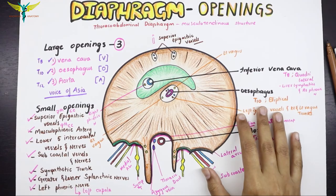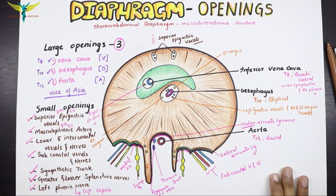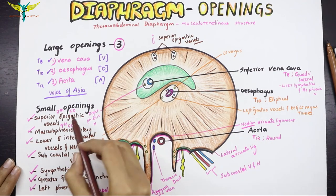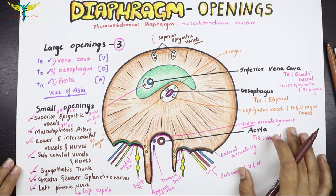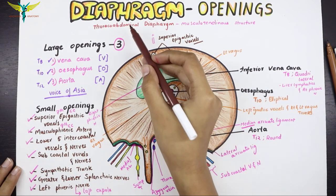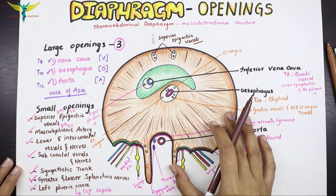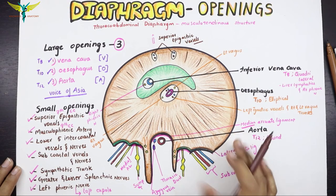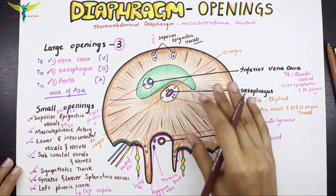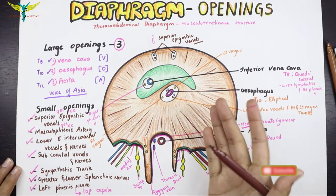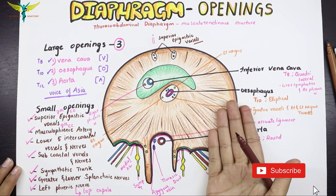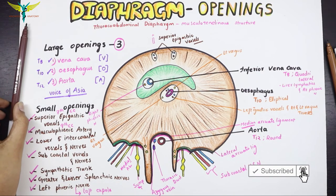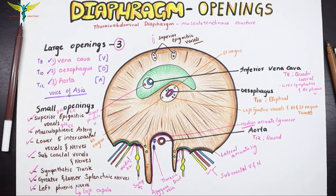So this is all about the openings of the diaphragm. There are three large openings and several small openings. The thoracoabdominal diaphragm is a musculotendinous structure which separates the upper thoracic cavity from the lower abdominal cavity. This covers all the structures that pierce the diaphragm.